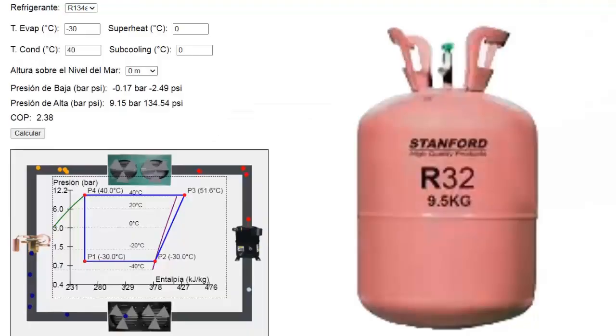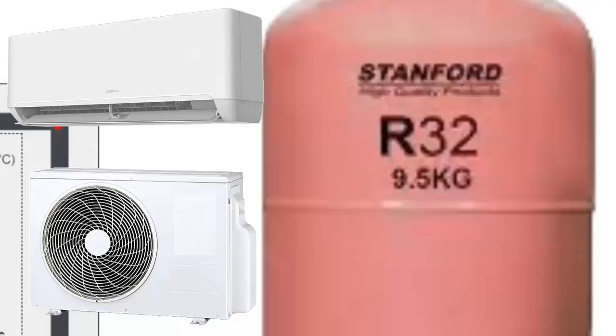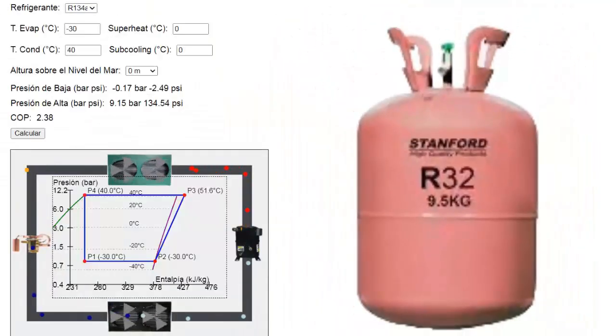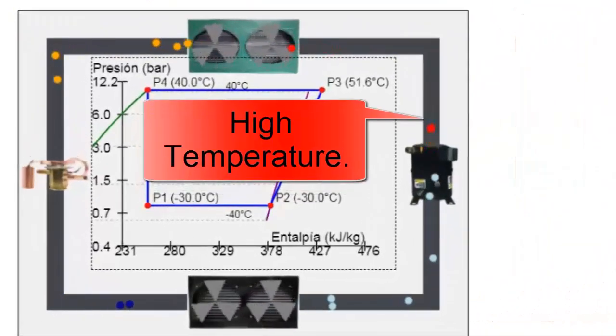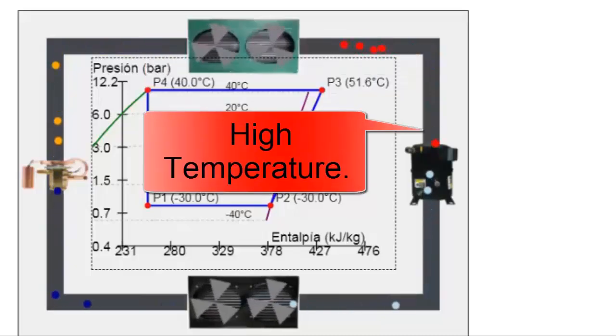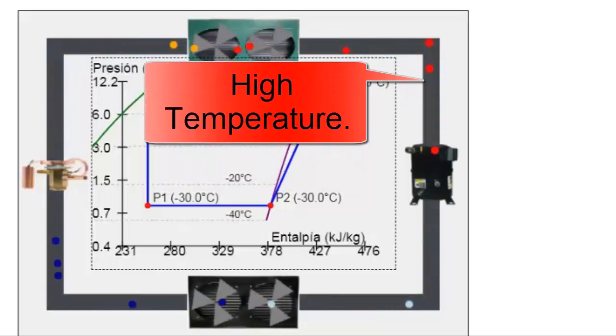Although R32 is a high-efficiency gas, it is especially intended for air conditioning systems, since in lower-temperature applications such as freezers or refrigerators, it shows a very high discharge temperature at the compressor outlet, which restricts its use in low and medium temperature applications.